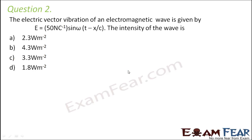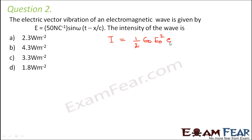Question number two: the electric vector vibration of an electromagnetic wave is given by E = 50 newton per coulomb sin(ωt − x/c). The intensity of the wave is what we need to find. The intensity of an electromagnetic wave is given by half ε₀ E₀² × c. In this question, the electric field is given, so we use this expression involving electric field. Had the magnetic field been given, we would have used the expression (1/2) B² / μ₀ × c.